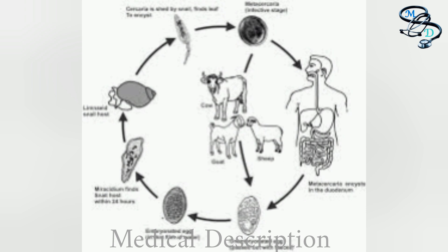Fasciola hepatica eggs are broadly ellipsoidal, operculated, and measure 130 to 150 micrometers by 60 to 90 micrometers. The adult Fasciola hepatica fluke is stained with carmine, measuring 30 mm by 13 mm. Fossaria bulamoides is a snail that serves as the host for Fasciola hepatica in the western United States.